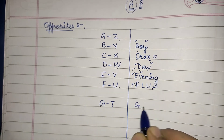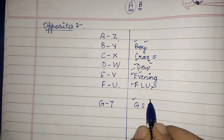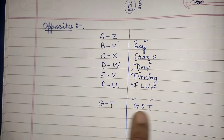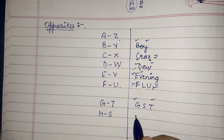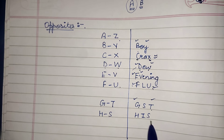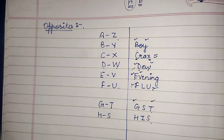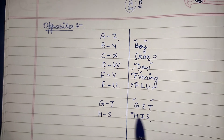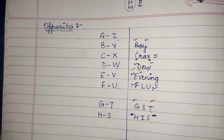Next is G and T — do you know there is GST on the goods we purchase? So G and T are opposite to each other. You can also make your own words — you don't need to memorize only these words. If you think some other simple words work better for you, you can use those tricks instead.